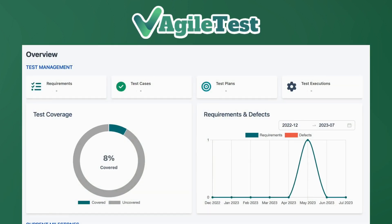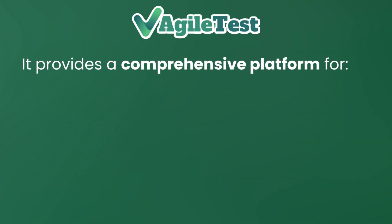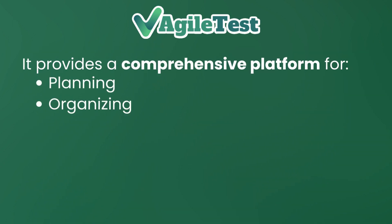AgileTest is a powerful tool that integrates with JIRA. It provides a comprehensive platform for planning, organizing, executing, and tracking software testing activities within the JIRA ecosystem.